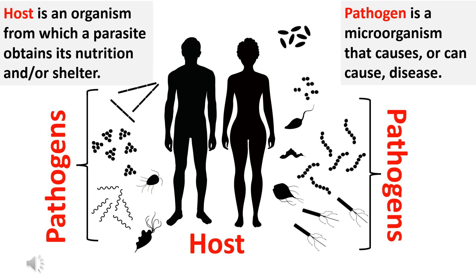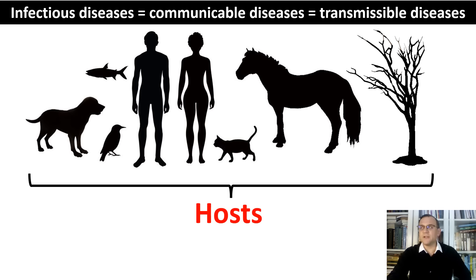A host in the context of infectious disease refers to an organism from which a parasite obtains its nutrients and shelter. A pathogen is usually defined as a microorganism that causes or can cause disease. Infectious diseases are also known as communicable diseases or transmissible diseases. They are illnesses that result from the infection, presence and growth of germs in the individual human or other animal hosts.